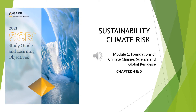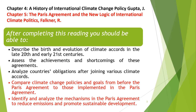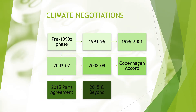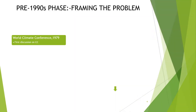Hello and welcome back. This is a short primer on chapters 4 and 5 of the Sustainability Climate Risk Certification. Both these chapters deal with climate negotiations from the 1970s to the 2020s. These are the various phases in climate negotiation. Let's study them one by one.